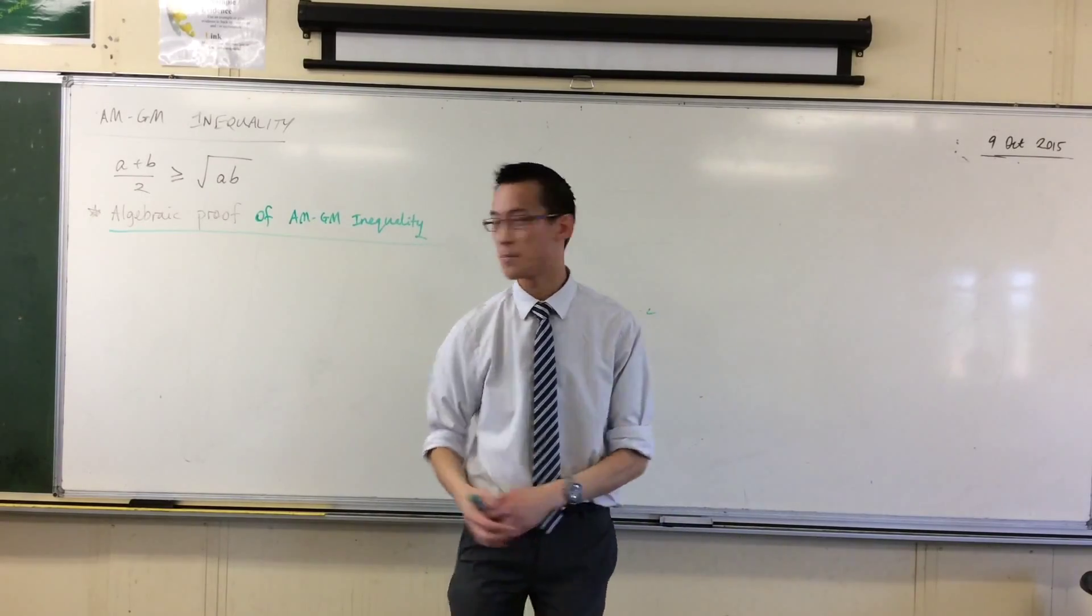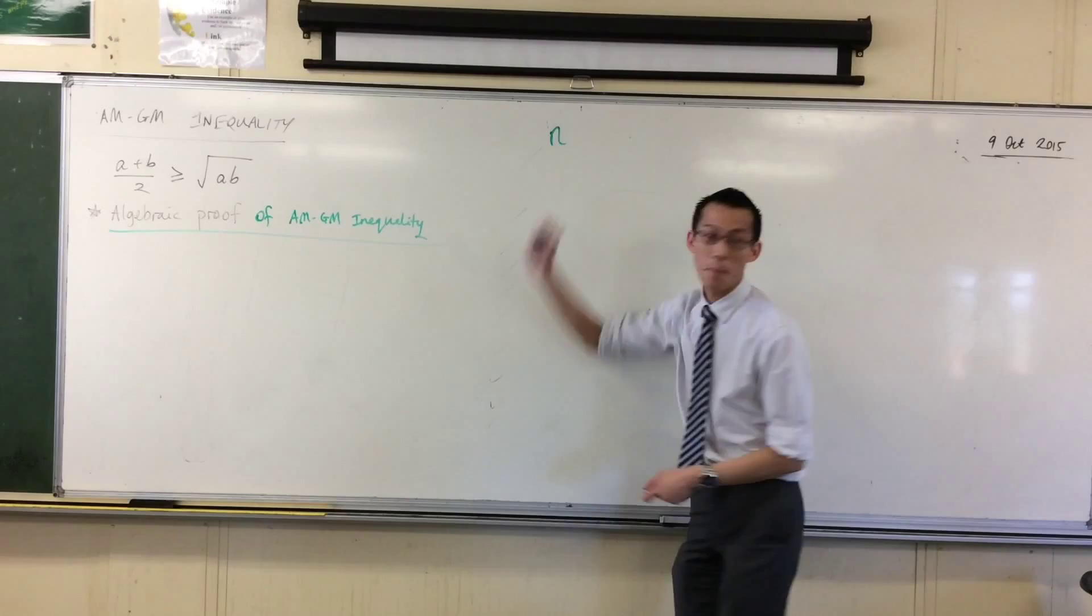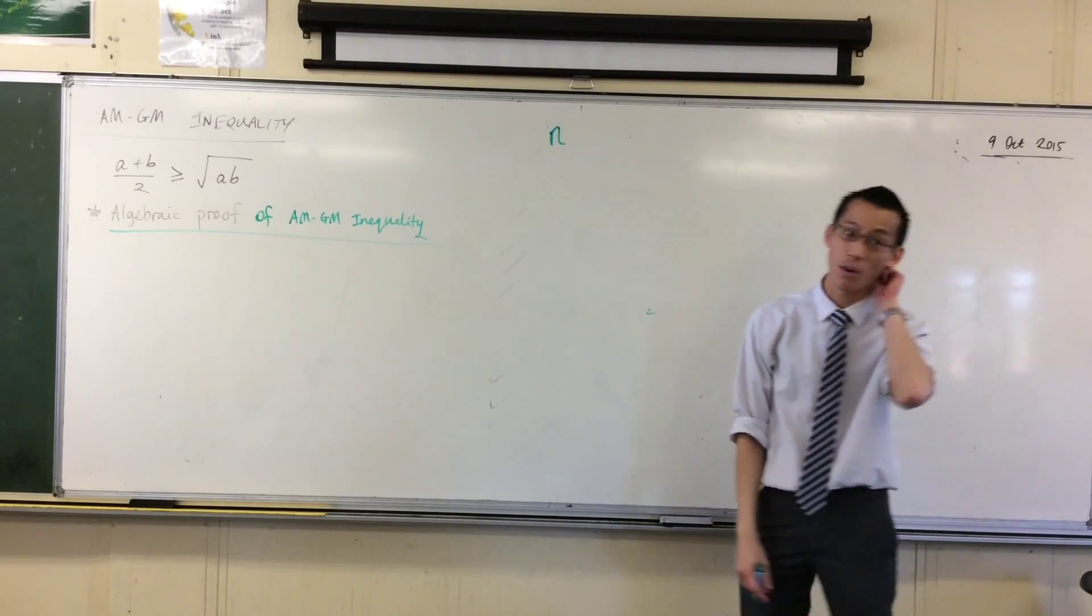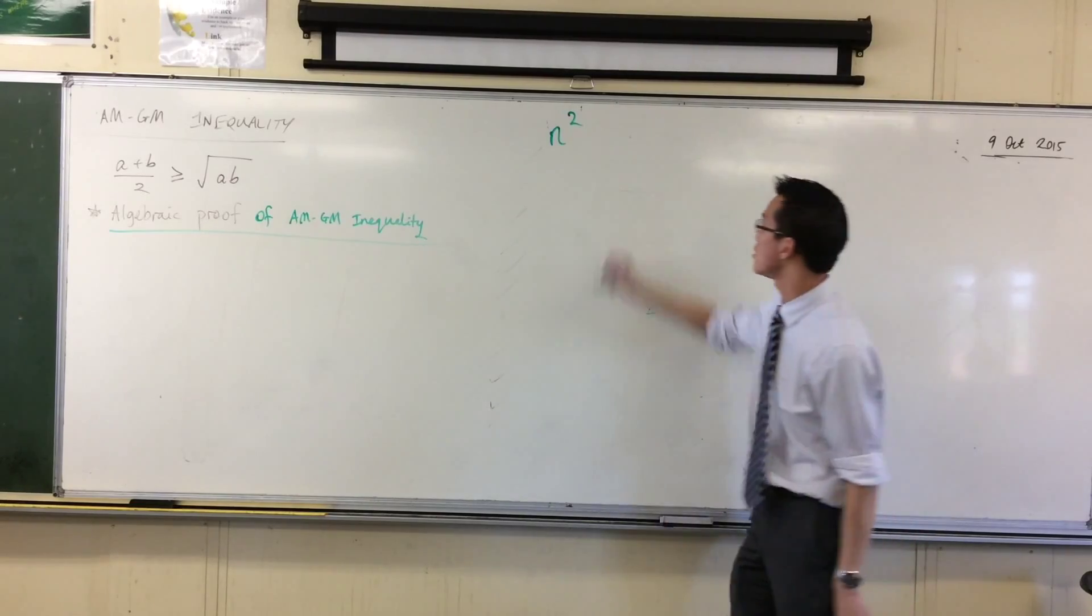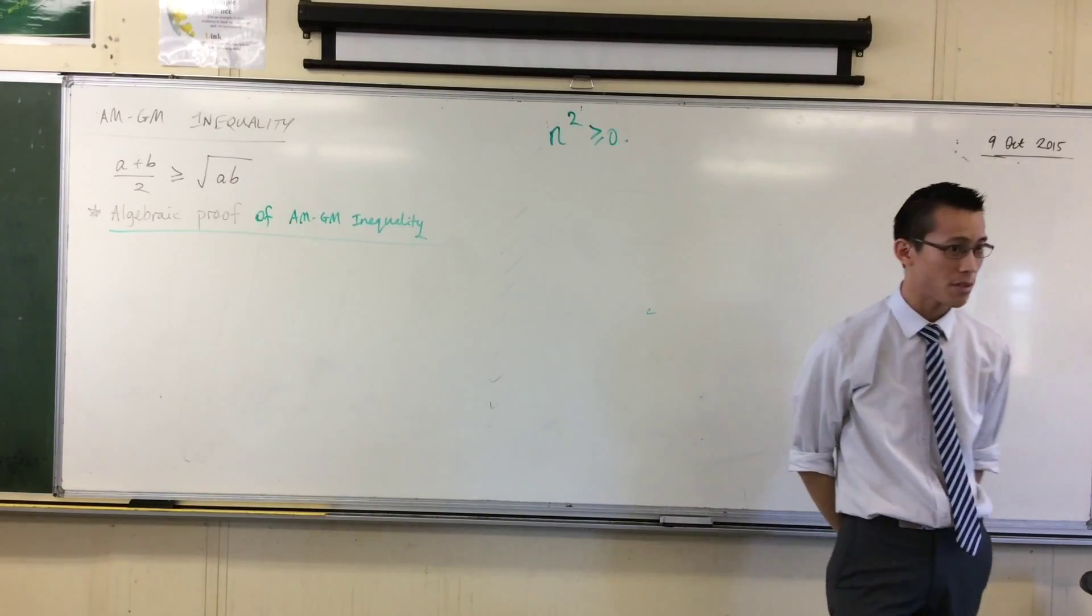The reason I think of squares is because if you take any number n, positive, negative, zero, and you square it, it doesn't matter what n is, you're going to get something greater than or equal to zero. Do you agree with that?